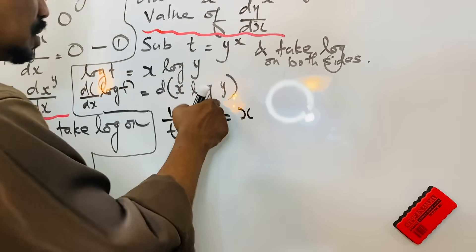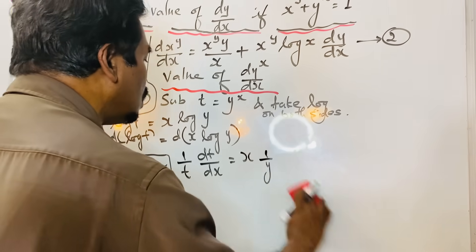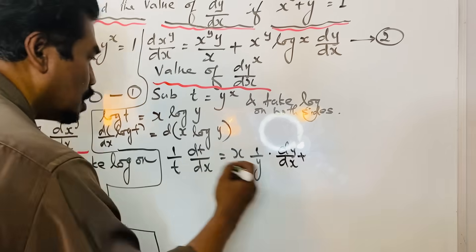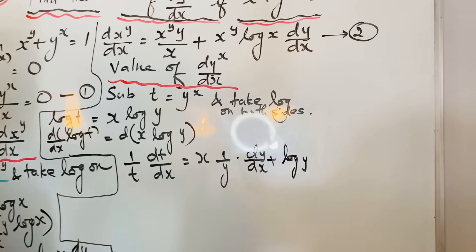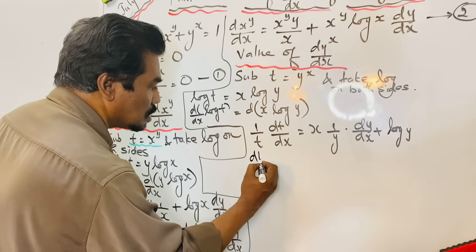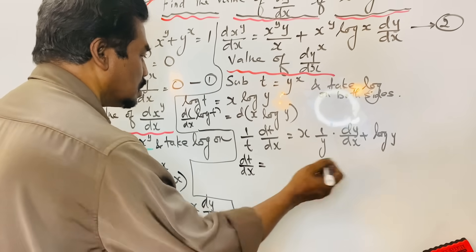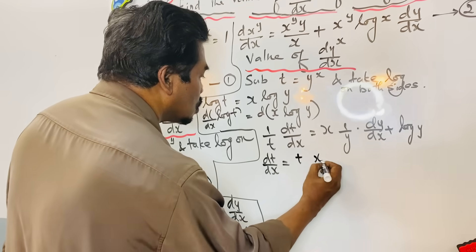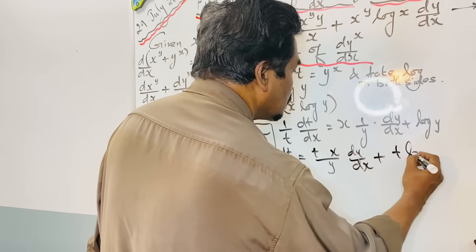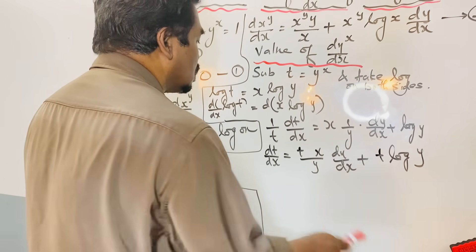Keeping x and differentiating log y: x times 1 over y times dy over dx, plus keeping log y and differentiating x — dx by dx is just 1. Now finding the value of dt over dx: t will go to the right-hand side and multiply all terms, giving dt over dx equal to t·(x/y)·dy over dx plus t·log y. Substituting t equal to y power x.